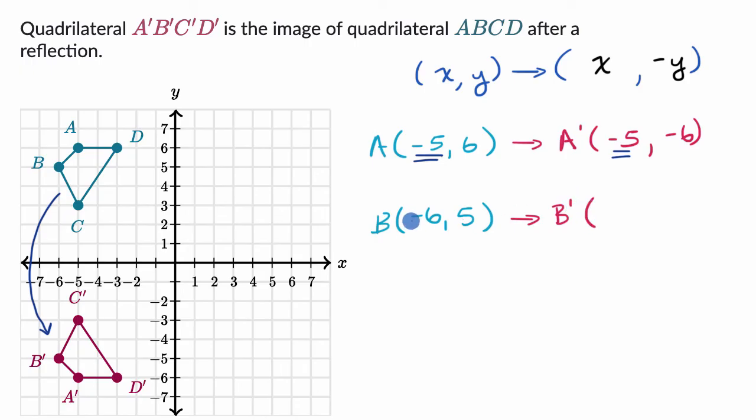B prime should be at, we should hold the X the same, negative six, and we should make the Y the opposite of this. So it should be at negative six comma negative five. And if we go to negative six comma negative five, that is indeed where B prime is.